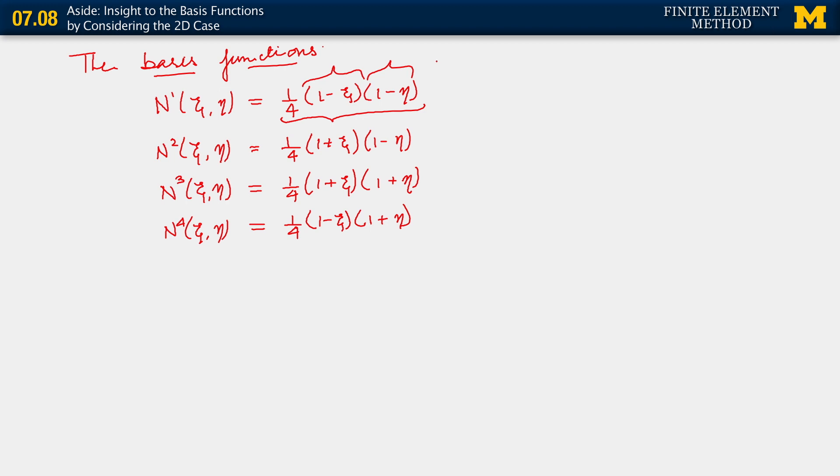All right, these basis functions, again, we observe given our definition of the specific coordinates of the nodal points in the parent domain, these basis functions also do satisfy the Kronecker delta property. So we have NA(xi B, eta B) equals delta AB. The Kronecker delta property with which we are, by now, very familiar.